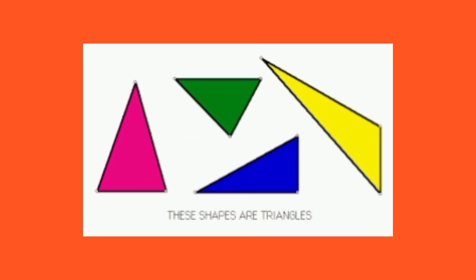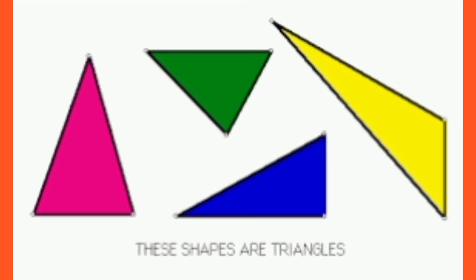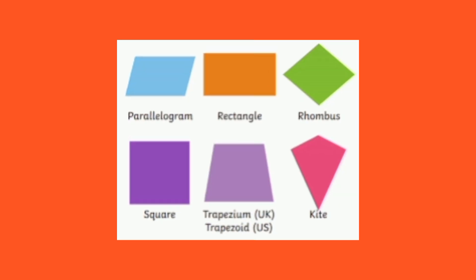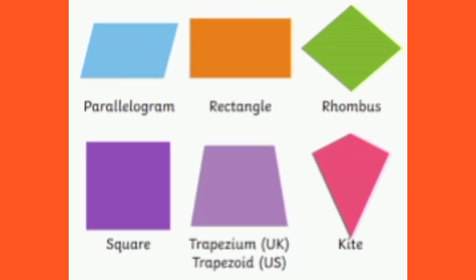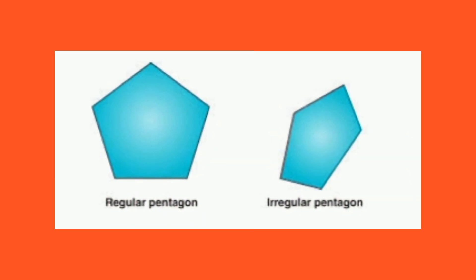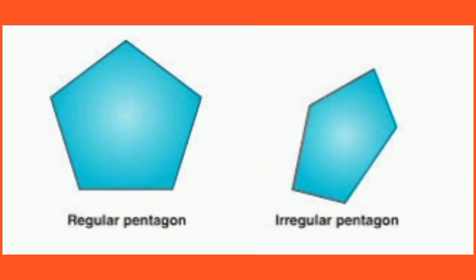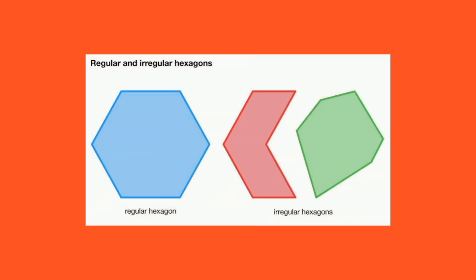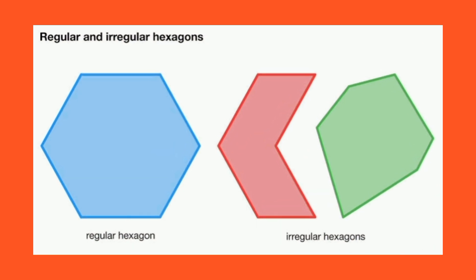Triangle, also known as trigon — these are shapes with 3 sides. Quadrilateral, also known as tetragon — these are shapes with 4 sides. Pentagon — these are shapes with 5 sides. Hexagon — these are shapes with 6 sides.